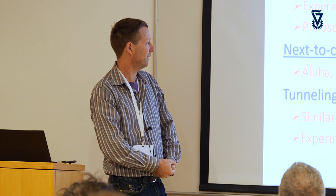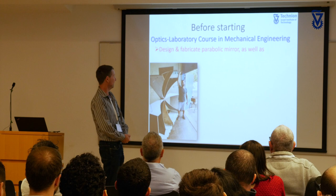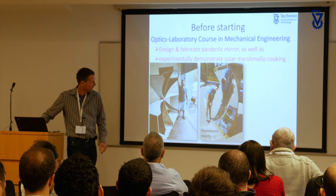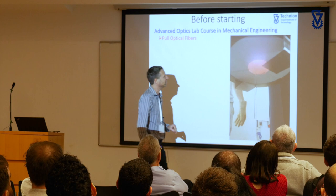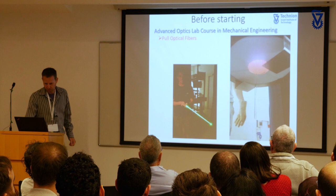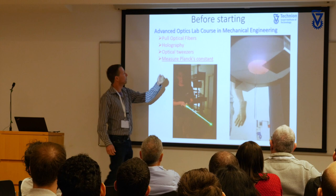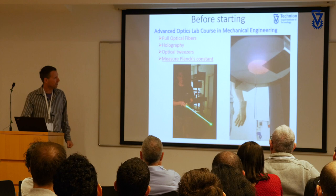In our optics laboratory course, students design, fabricate, and demonstrate parabolic mirrors. They also experimentally use them to demonstrate caramel solar marshmallow cooking, which significantly improves the current state of the art in this field. Students also pull fiber, play with what's left of the ingot, and aim a spectrometer at a black body to actually measure Planck's constant. If they calibrate their system well, they get to many significant digits. It's a very nice experiment — I encourage all students to take this course.